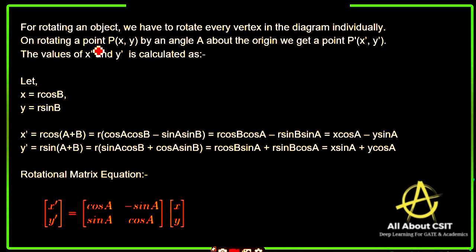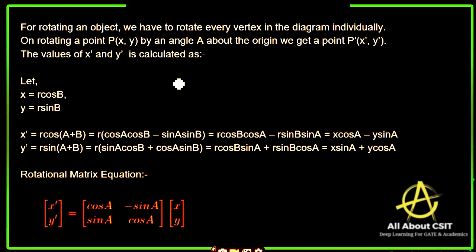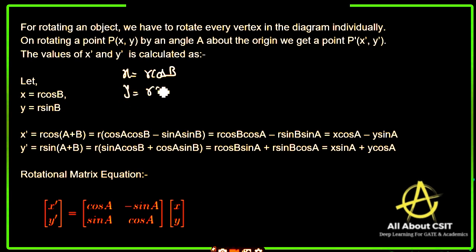On rotating a point P(x, y) by an angle A about the origin, we get a new point P'(x', y'). The values of x' and y' are calculated by a formula. Let's take the given coordinate where x = r cos(b) and y = r sin(b).